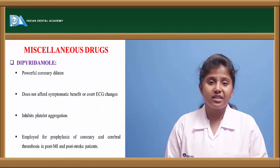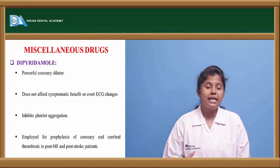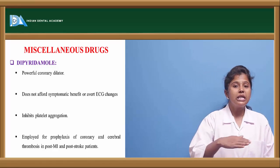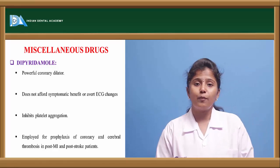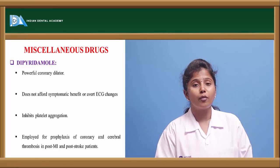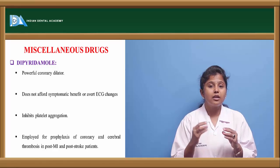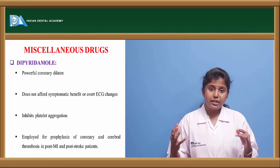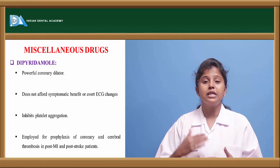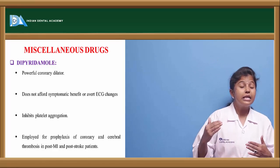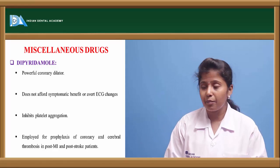Dipyridamole is a coronary dilatory miscellaneous drug. It dilates coronary arteries without altering ECG effects and acts by inhibiting platelet aggregation, thereby preventing clot formation. It does not dissolve existing clots but prevents new clot formation, ensuring proper oxygen supply. It is mainly used for prophylaxis of coronary and cerebral thrombosis in post-myocardial infarction patients.